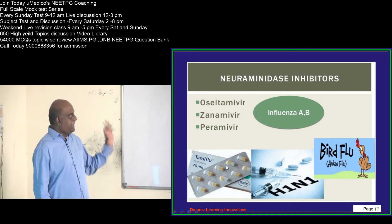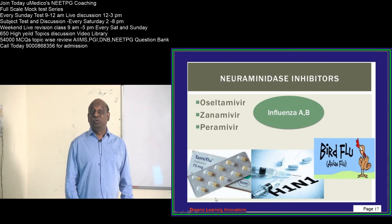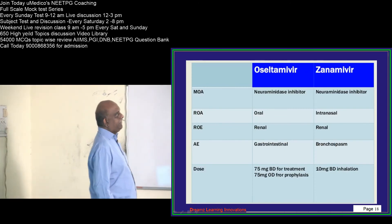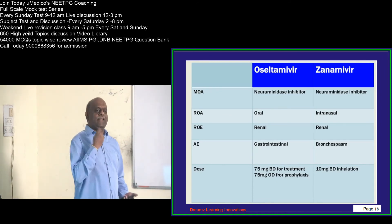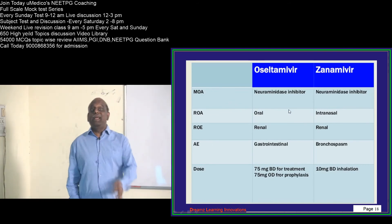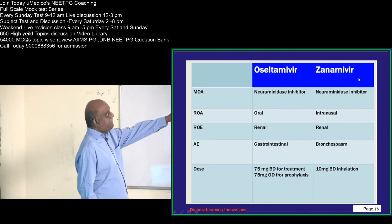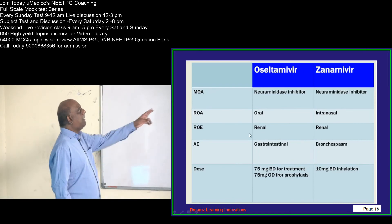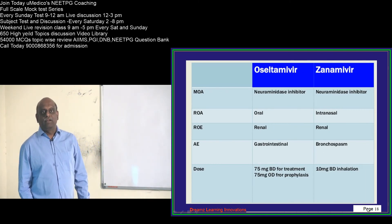Neuraminidase inhibitors like tamiflu (oseltamivir) are effective against both influenza A and B. A favorite exam question: which neuraminidase inhibitor is taken intranasally? This question has appeared in All India, AIIMS, and other entrance exams.